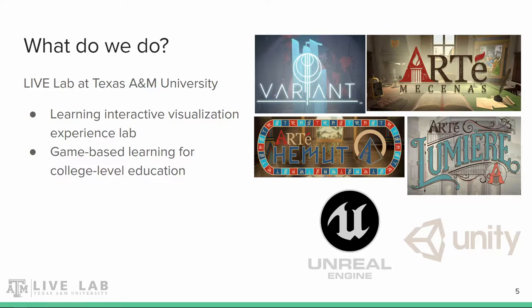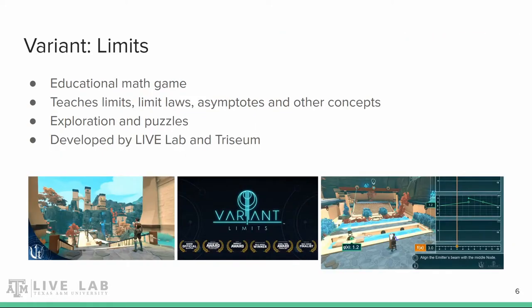On the right side you can see a couple of titles which we've developed in collaboration with the game company Trisium, which is based in Bryan, Texas. An example of our work is Variant Limits, an educational game that teaches players the fundamentals of calculus. You play as a girl named Equa and attempt to unravel the game's narrative by solving calculus-based puzzles. Variant is offered as part of a game-based course at A&M, which replaces or gives credit for introductory calculus classes.